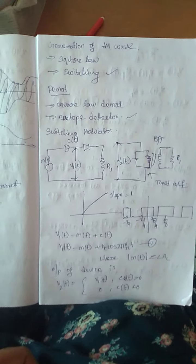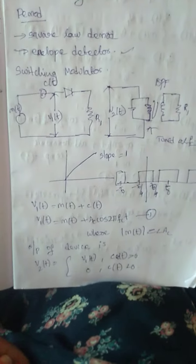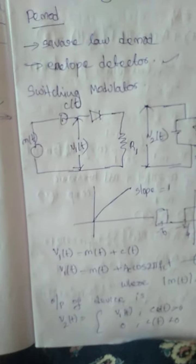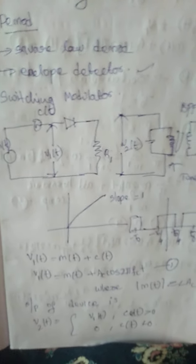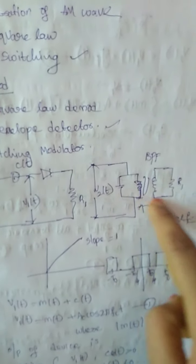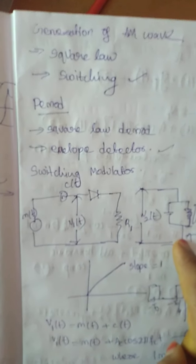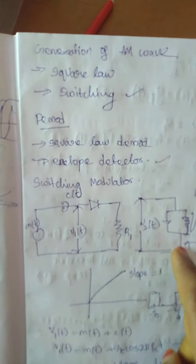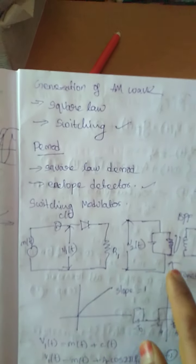So what does a switching modulator do? This is a block diagram of a switching modulator. If you observe, we have a message signal m(t), c(t) is a carrier signal, a diode, a resistor, a transformer, and a band pass filter tuned at fc.